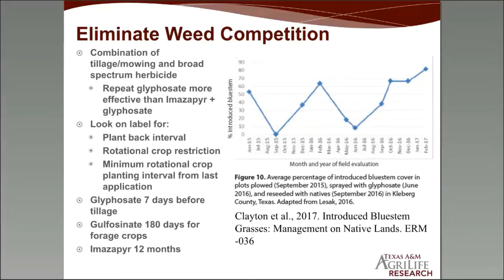Check your herbicide label for the plant-back interval — also called the rotational crop restriction or minimum rotational crop planting interval. For glyphosate, it is seven days before you can till and 180 days for forage crops. For imazapyr, it is 12 months. The timing of your herbicide can really impact the timing of your planting because you must follow the label — the label is the law.